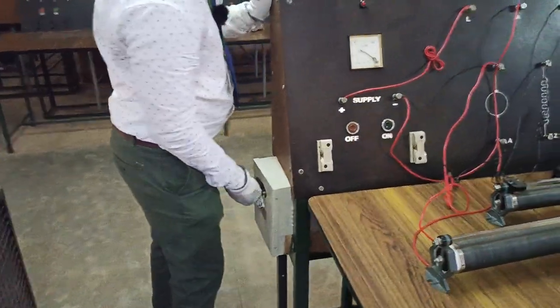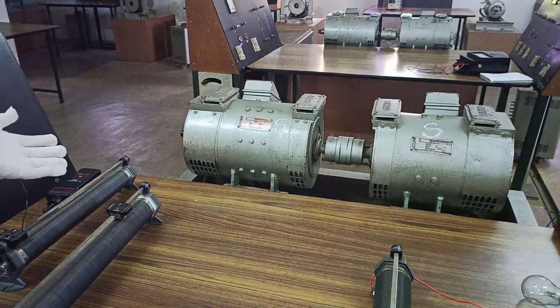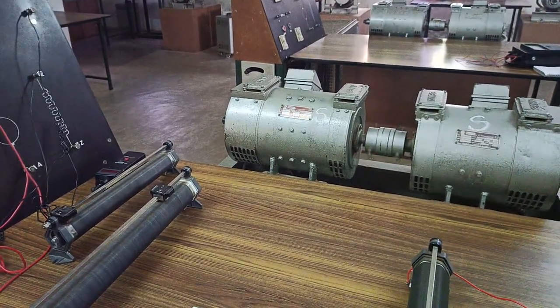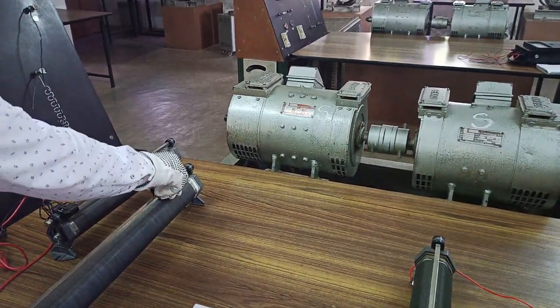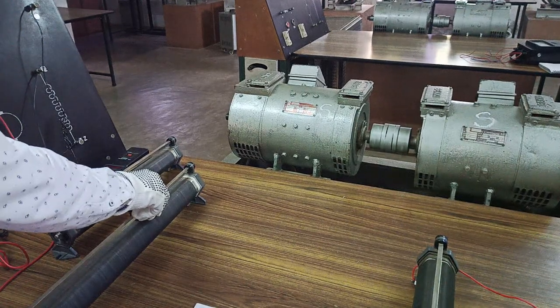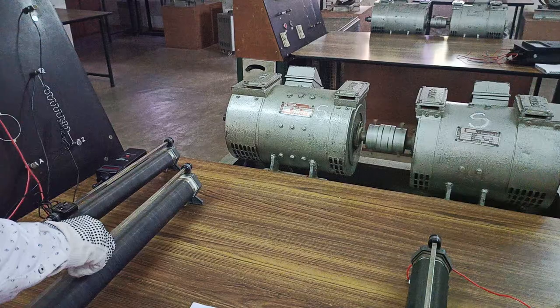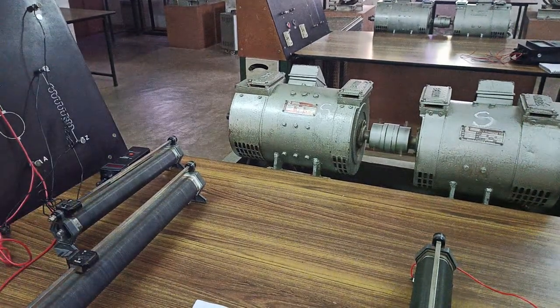As soon as you start the DC shunt motor since the armature is in maximum resistance slowly it has been started and we have to excite it with constant speed by adjusting the armature resistance. As soon as you adjust it to the required speed it will run with 1500 RPM.